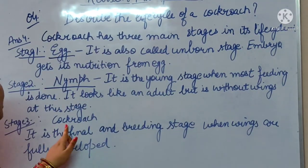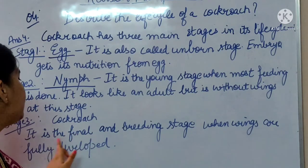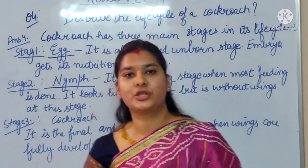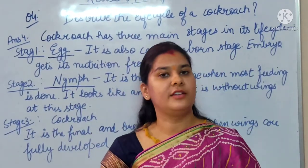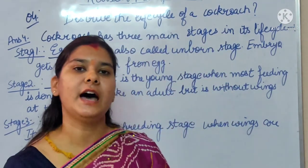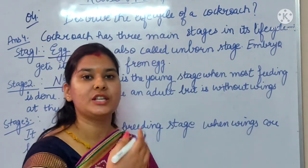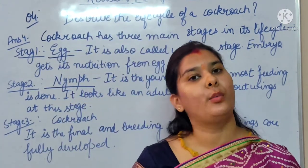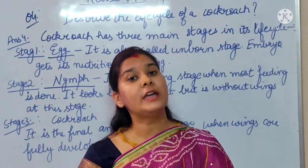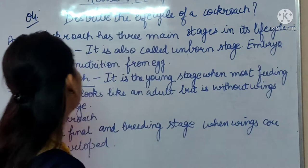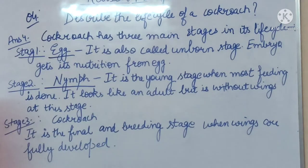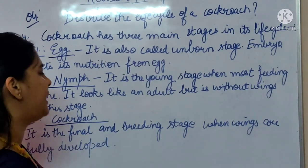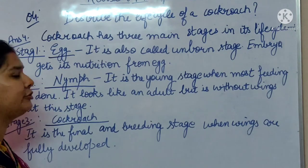Stage 3 is the adult cockroach. It is the final and breeding stage when wings are fully developed. In stage 2, the wings are not fully developed — they are not there yet. But in stage 3, it becomes a proper adult cockroach with wings. So these are the three stages: first stage is egg, second stage is nymph, and third stage is adult cockroach — the final and breeding stage when wings are fully developed.